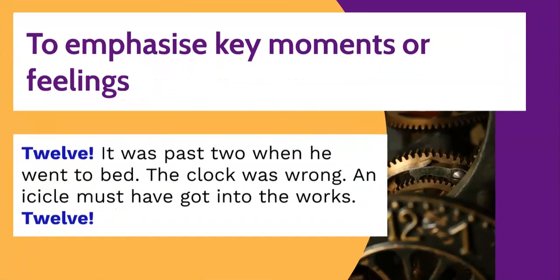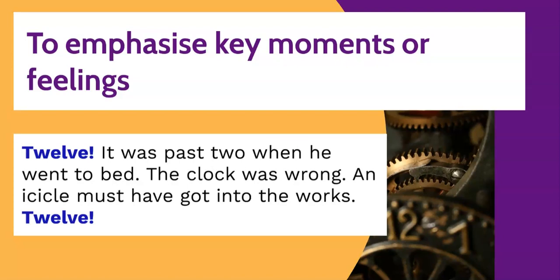In a similar way to persuasive writing, minor sentences can be used to emphasise key moments or feelings. Minor sentences can be repeated at key moments to add extra emphasis, and here the word 'twelve' is emphasised. Scrooge wakes up in the middle of the night and is confused about the time. 'Twelve? It was past two when he went to bed. The clock was wrong. An icicle must have got in the works. Twelve?' The minor sentences emphasise Scrooge's feelings of confusion, because Scrooge went to bed after two in the morning and the minor sentences emphasise that it's midnight. Dickens uses this technique to introduce the idea of the supernatural, because any moment the first of the three spirits will arrive.